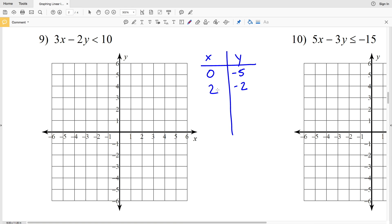Now I have two points so I can create my line: 0, negative 5 and 2, negative 2. This is going to be a dashed line since I'm using the less than sign. Now let's try our test point. Let's use the same test point we've been using: 0, 0. If I plug 0 in for X and 0 in for Y, I have 0 is less than positive 10, which is true.